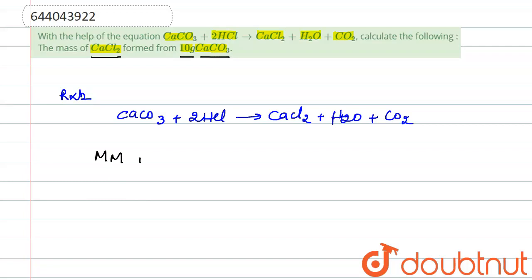So MM of CaCO3, this is equals to, for calcium this is 40 plus for carbon this is 12 and for oxygen, 3 oxygen, so this is 3 into 16, so this will be equals to 100. So molecular mass or molar mass of CaCO3 will be 100 gram.